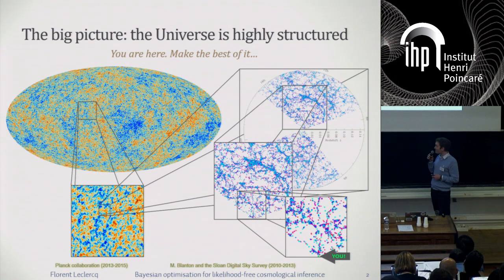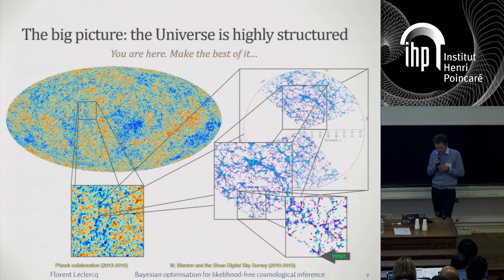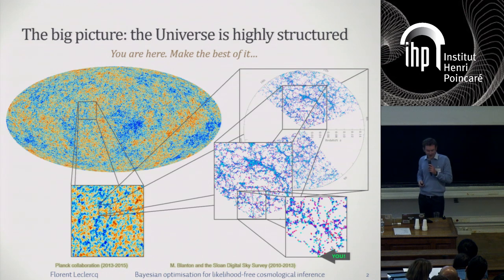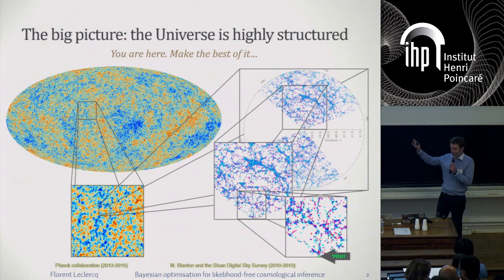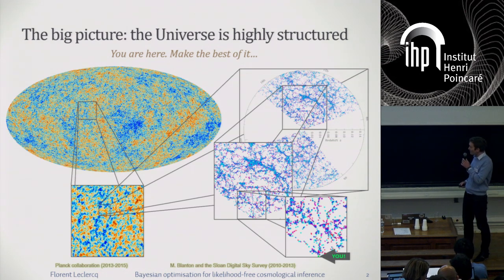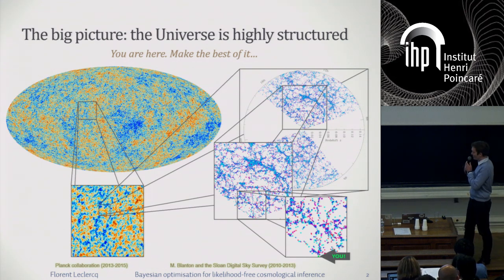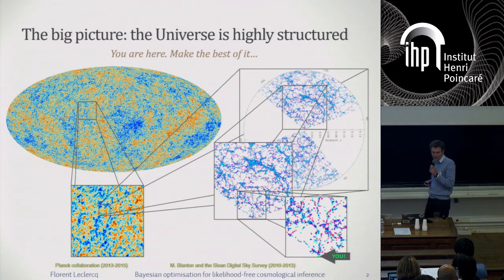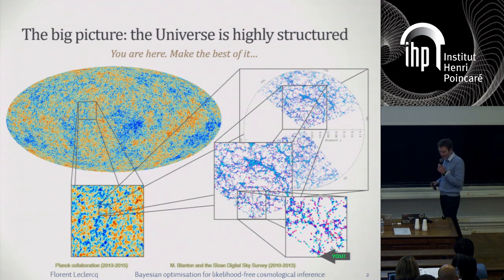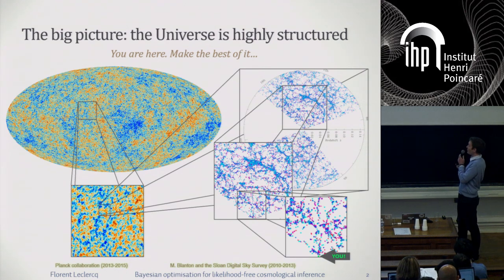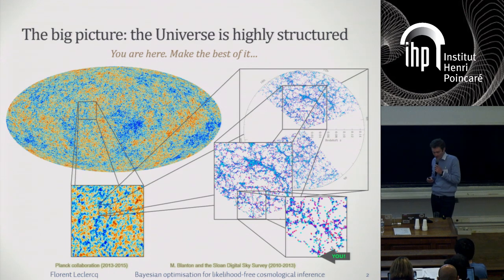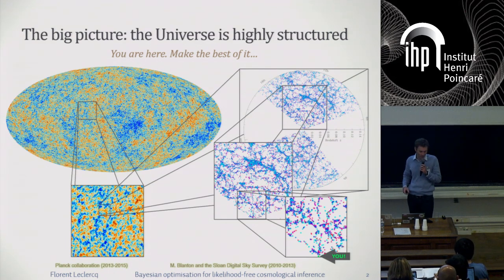Here are observations on the left of the cosmic microwave background — these beautiful observations from the Planck satellite, with structure in these fluctuations of the cosmic microwave background. And here on the right, observations from galaxy surveys — this is the Sloan Digital Sky Survey. This also shows very rich structure with this network of sheets, filaments and clusters, which we call the cosmic web.